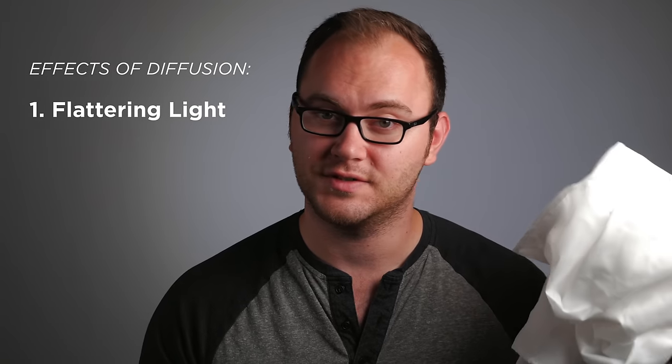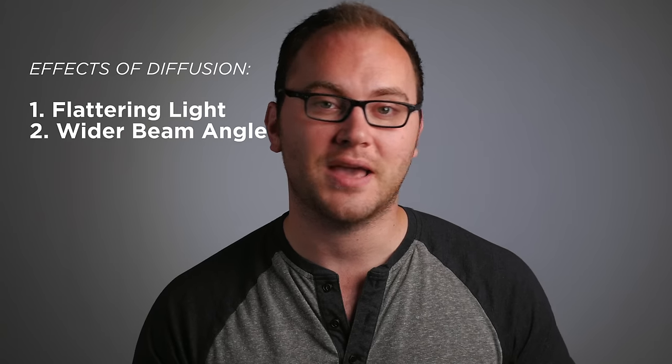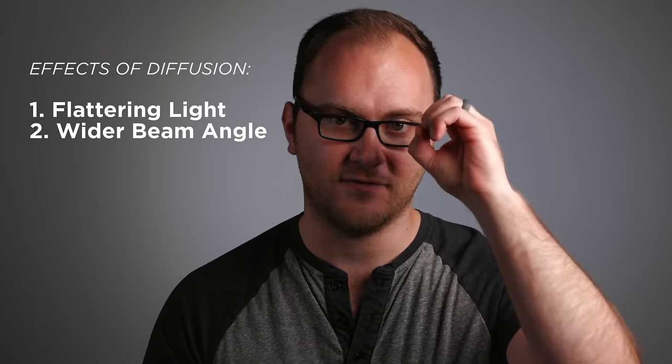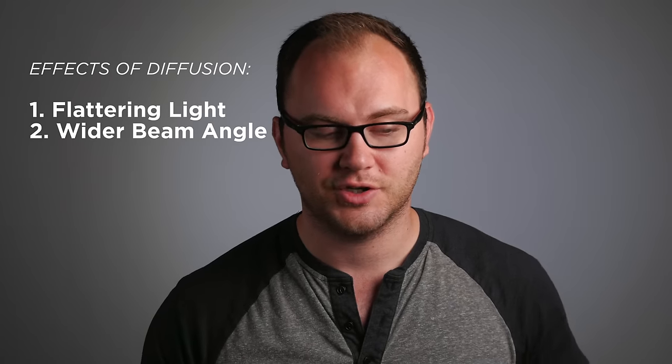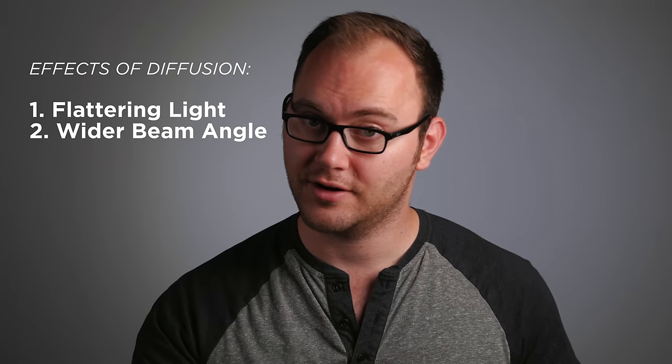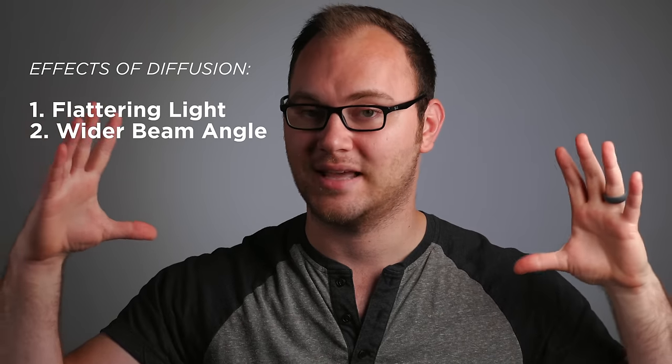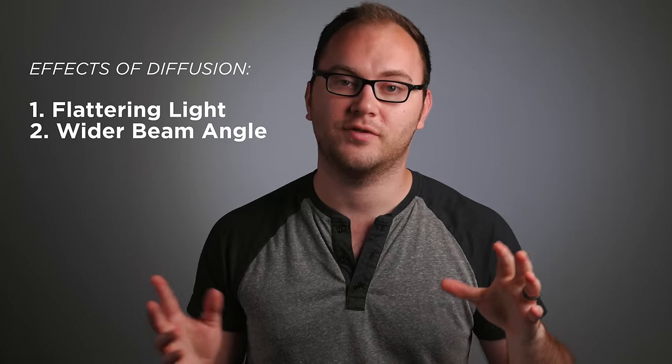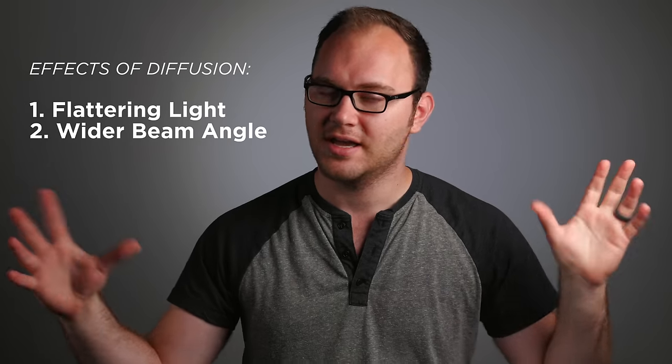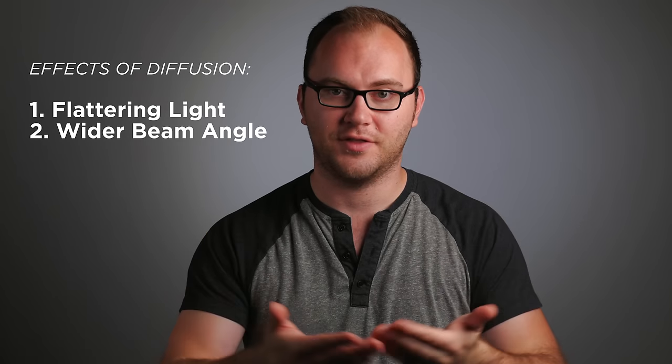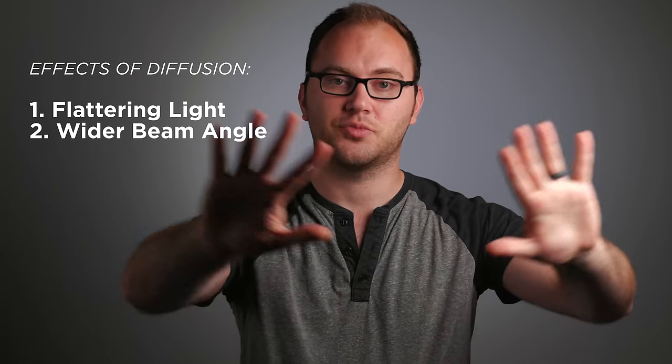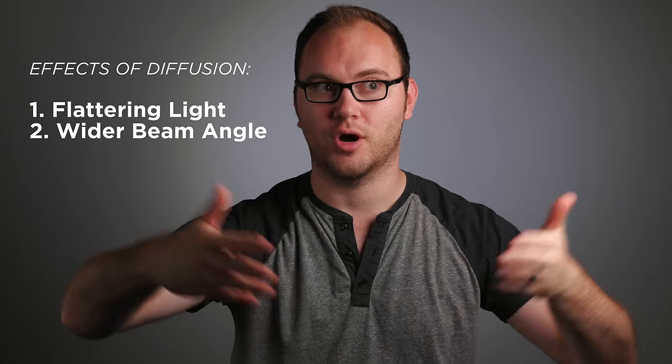The second thing is when using diffusion, you're going to be changing the beam angle of the light. So if you take a very directional spotlight, shoot it through some diffusion or several layers of diffusion, you're going to be taking that spot and spreading it out. So keep this in mind. If you ever need to light a large area, it doesn't matter what light you hit it with. If you throw diffusion in front of it, it's going to spread that light out to a broader beam angle.